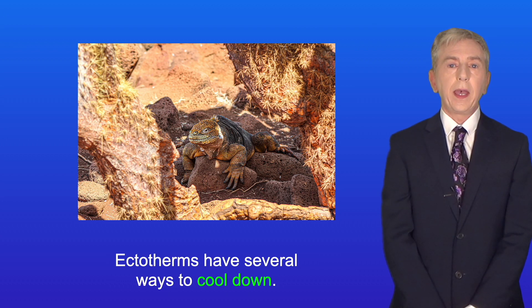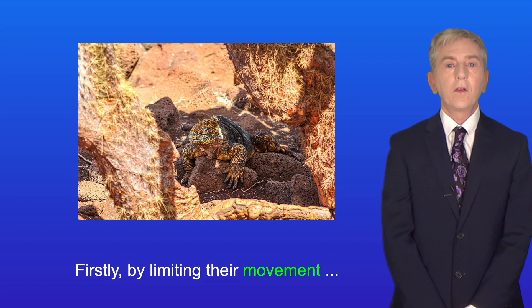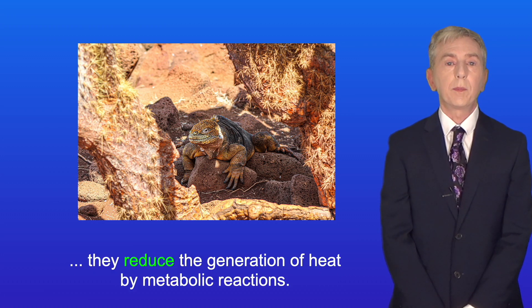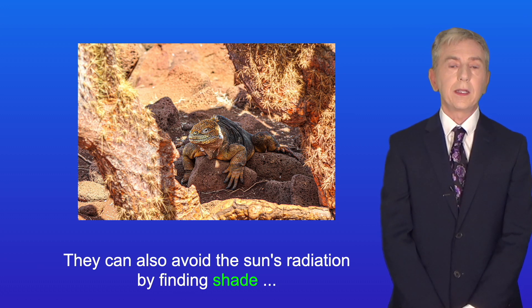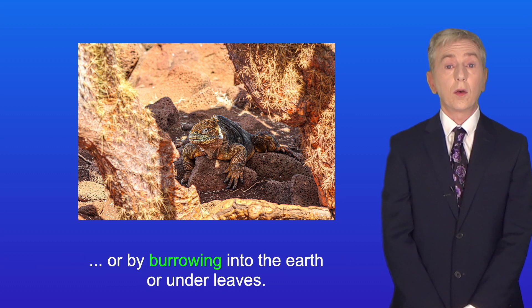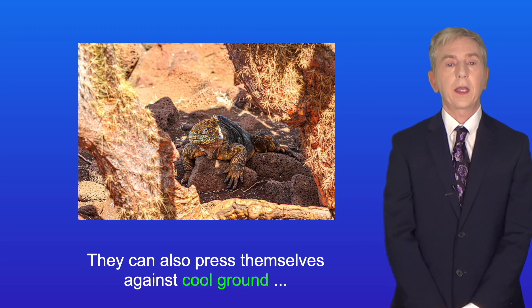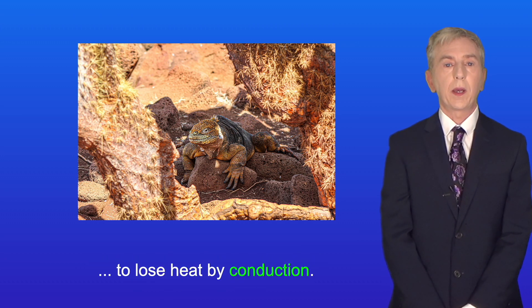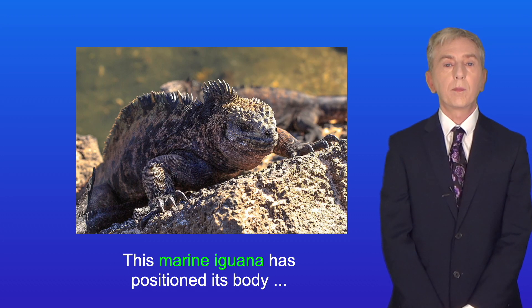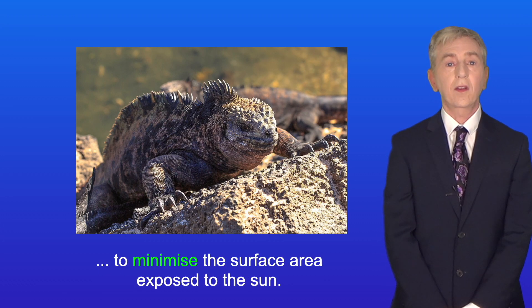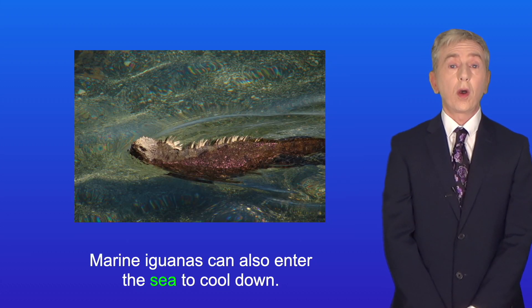Ectotherms also have several ways to cool down. By limiting their movement, they reduce the generation of heat by metabolic reactions. They can also avoid the sun's radiation by finding shade or by burrowing into the earth or under leaves. They can also press themselves against cool ground to lose heat by conduction. This marine iguana has positioned its body to minimize the surface area exposed to the sun. Marine iguanas can also enter the sea to cool down.